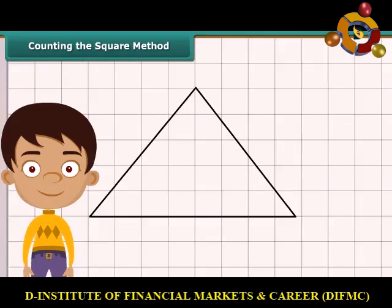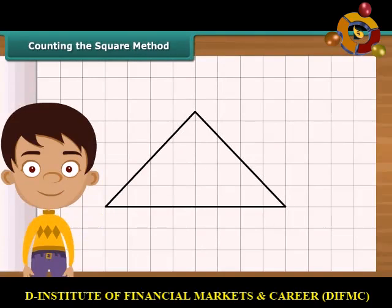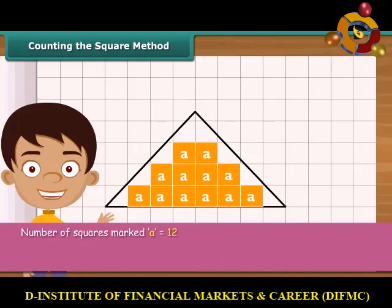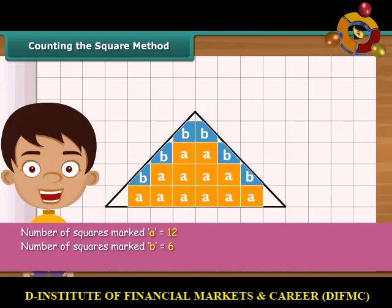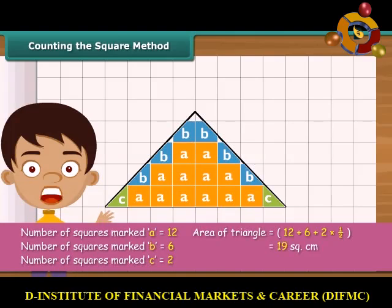Draw the triangle on squared paper. Each square has a side of one centimeter. First, count the complete squares enclosed by the triangle — mark each of these as A. Then count the squares whose more than half part is enclosed by the triangle — mark these as B. Now count the squares whose exact half part is enclosed by the triangle — mark each of these as C. Ignore the squares whose less than half part is enclosed by the triangle. The area of the triangle is 19 square centimeters.